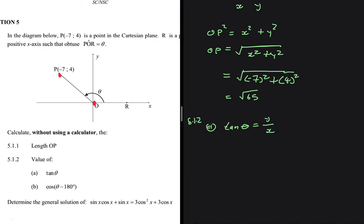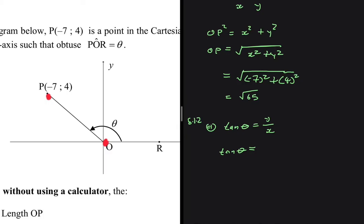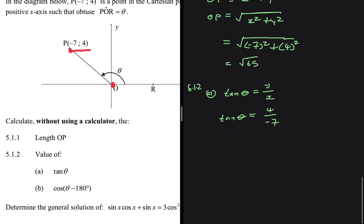It's easy to see now that we can say tan of theta equals — we are doing everything based on our point P, and this is what is guiding us. On point P, the y-value is 4, so we're going to have 4 divided by the x-value, which is minus 7. So the value of tan theta equals 4 divided by minus 7. It's quite straightforward — there's no trickery at all there.